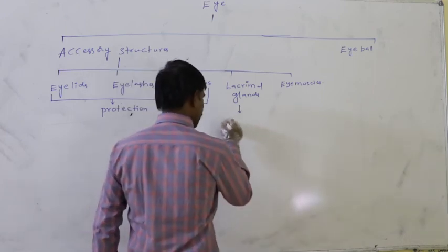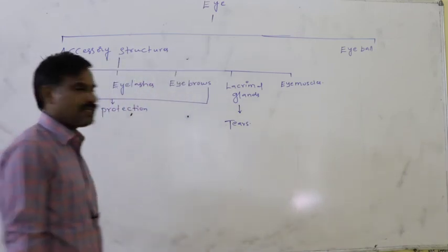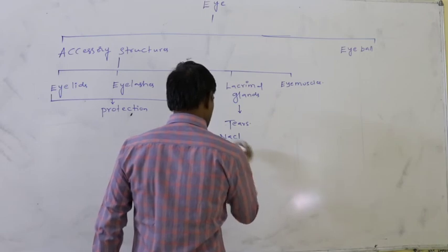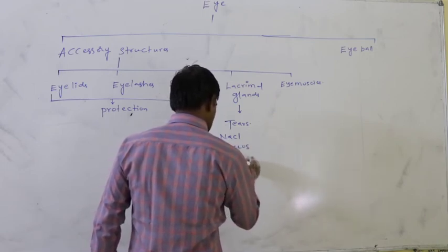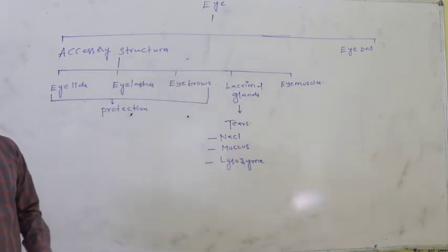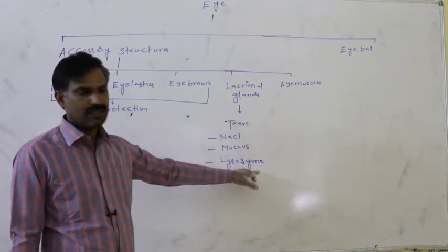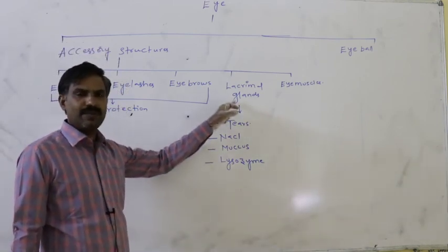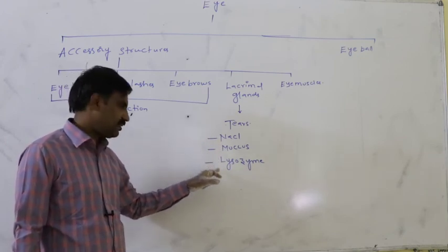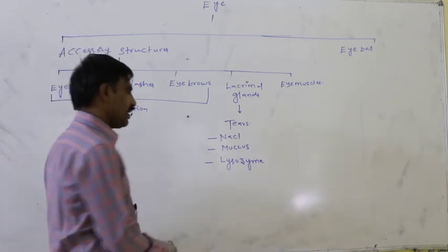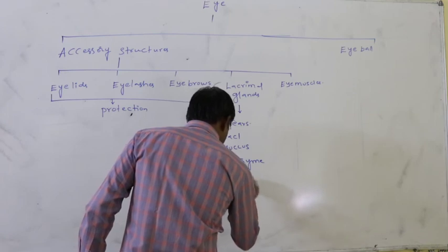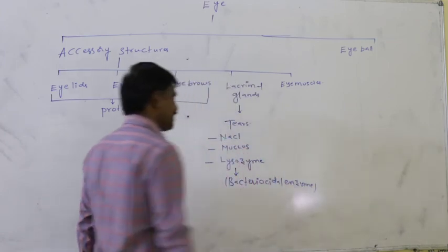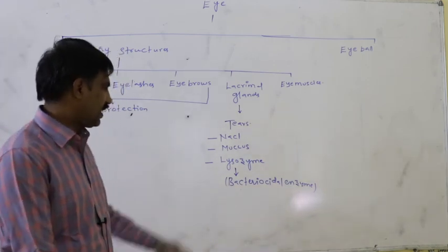Lacrimal glands always secrete tears. Tears contain NaCl, mucus, and lysozyme enzyme. Lysozyme always kills bacteria, so it is said to be a bactericidal enzyme. In the tears of a person, NaCl, mucus, and lysozyme enzyme are present — lysozyme is the bactericidal enzyme that kills bacteria.